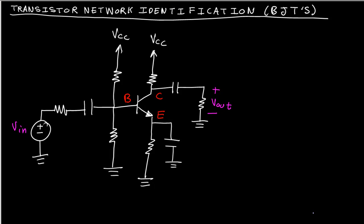We have this transistor network and the question is: is this a common base, common emitter, or common collector? Notice that the output is connected to the collector. The input is connected to the base, so the only one left is the emitter — that means this is a common emitter.